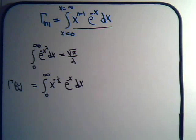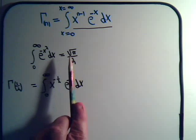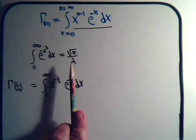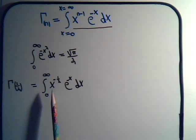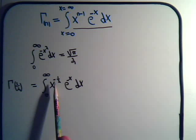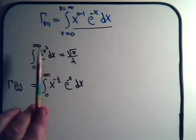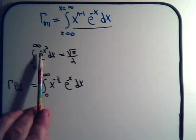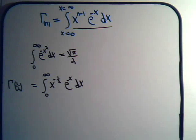In the last video we had proven that this integral here is equal to the square root of pi divided by 2. What we've been striving to do though is to evaluate this integral. We have x to the minus one half times e to the minus x dx. Here we work with the integral of e to the minus x squared dx. And we're interested in this one because this is the gamma function of one half.